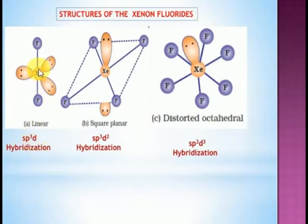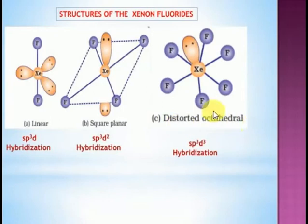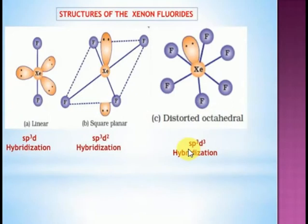Xenon tetrafluoride contains four fluorine atoms and two lone pairs. Total: four bond pairs + two lone pairs = six — one s, three p, two d orbitals — sp³d² hybridization, giving a square planar structure. Xenon hexafluoride is a distorted octahedral structure with sp³d³ hybridization — six bond pairs and one lone pair. These are very important structures for examinations: XeF₂ is linear, XeF₄ is square planar, XeF₆ is distorted octahedral.